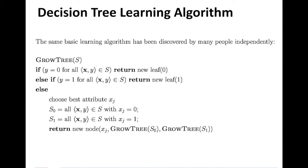Then you make two recursive calls: GrowTree(S0) and GrowTree(S1) to build the left and right subtrees respectively. The left side will have only data instances where X_J is zero, and the right side will have only data instances where X_J is one. This continues until you reach the stopping condition.